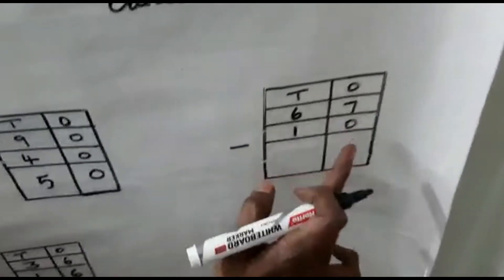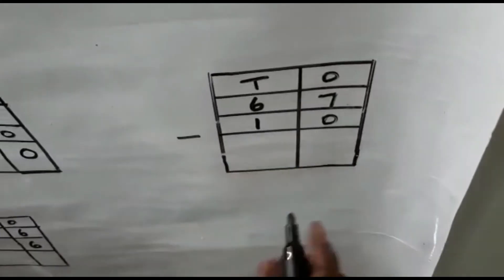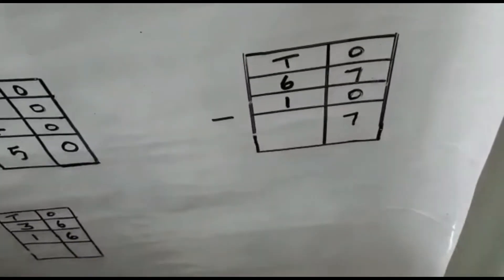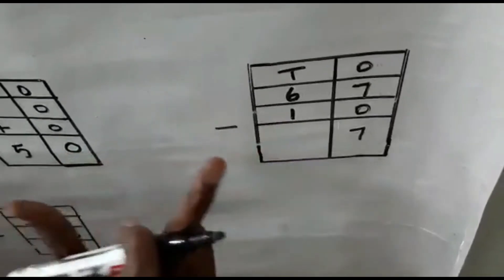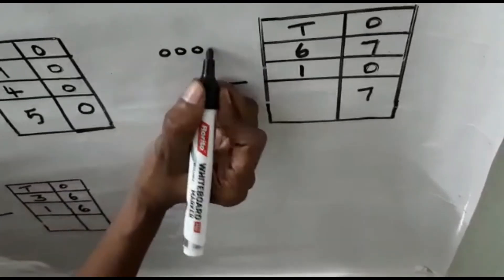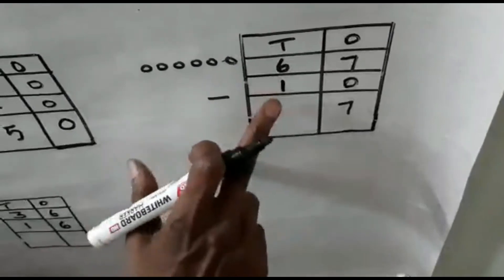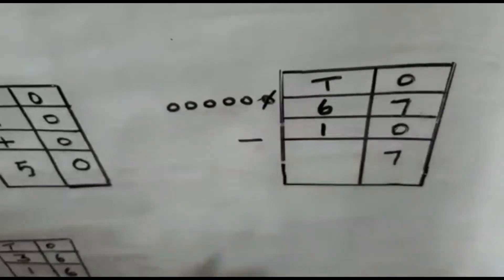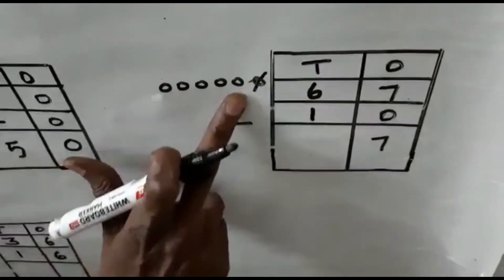Now here, 7 minus 0 means always when 0 comes, the answer is the same number. 7 minus 0 means 7. 6 minus 0 means 6. 2 minus 0 means 2. Now here 6 minus 1: put 6 circles — 1, 2, 3, 4, 5, 6 circles. Now you are going to cancel 1. How many remaining? 1, 2, 3, 4, 5.